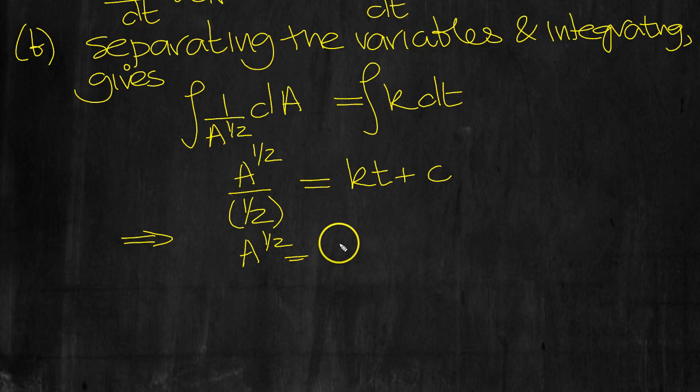Integrate with respect to t on the other side. So that tells us then that A to the half is equal to a half. Oh, it's 2. Sorry. 2A to the half equals Kt plus C. That's better. The 2 swings up. Kt plus C. OK, that's what we get here.